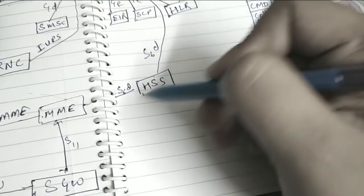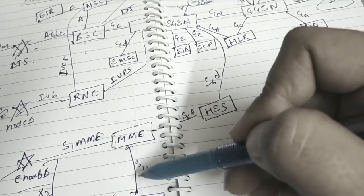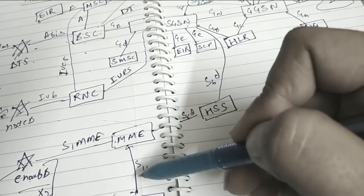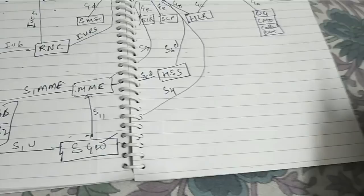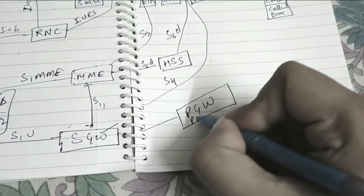By this medium only they exchange their information of the user. Now this SGSN is connected to MME and SGW also by S3 and S4 interface. Now let's go further. This SGW is connected further to the PGW or PDN Gateway. This is connected by S5 or S8 interface.